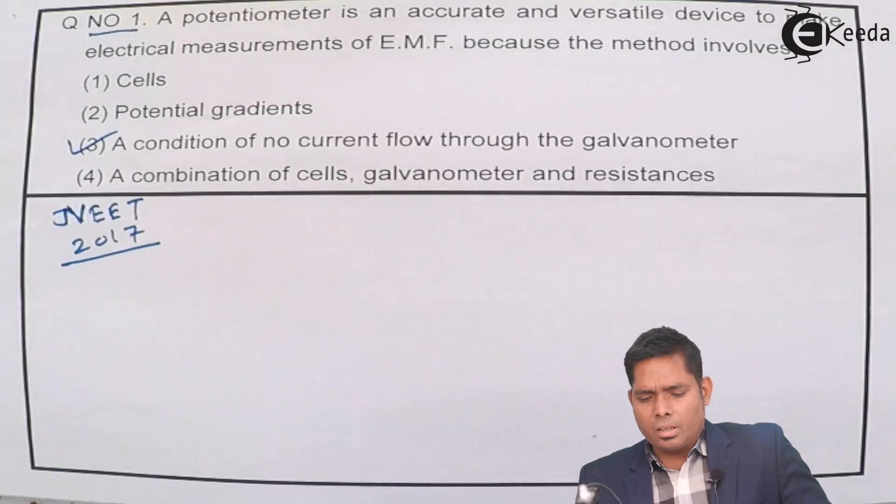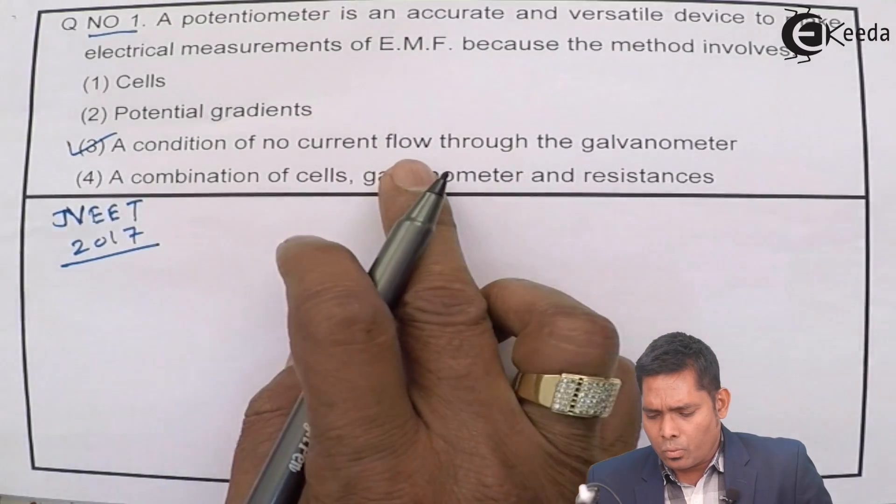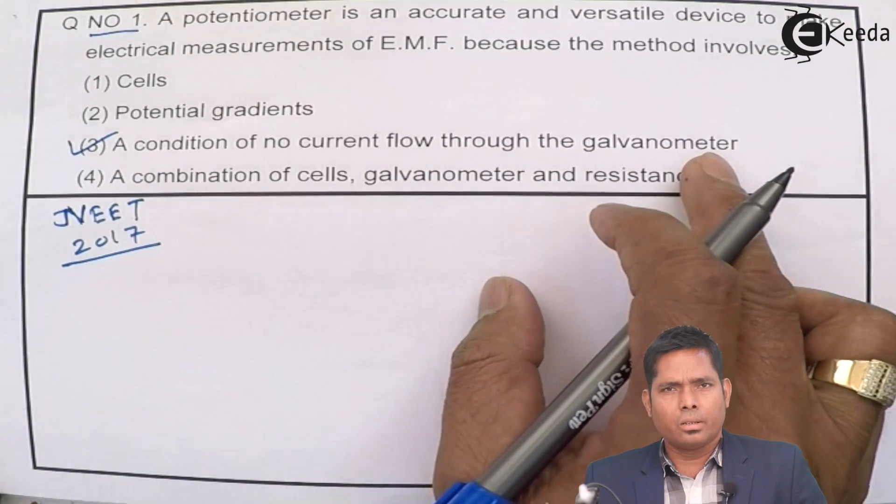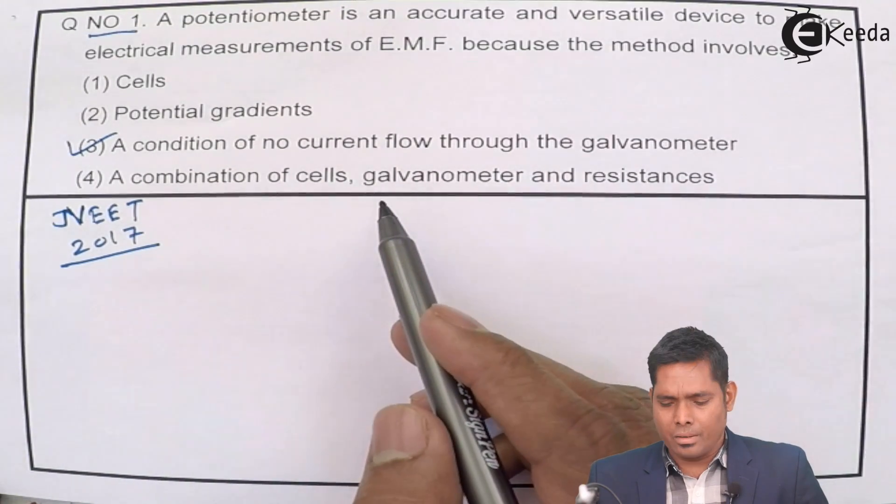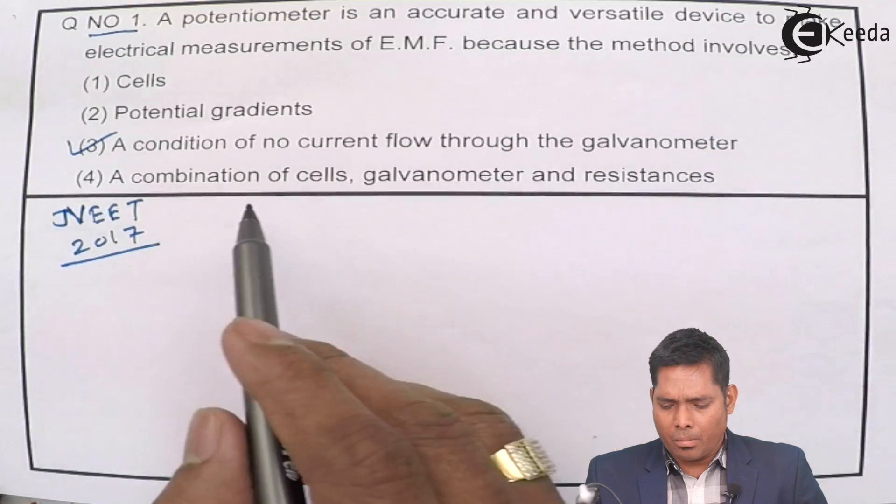A potentiometer, a condition of no current flowing through the galvanometer. So this is a theoretical question, but let me explain a bit about this.